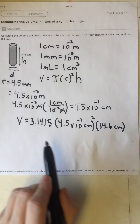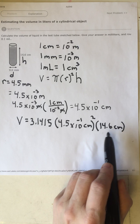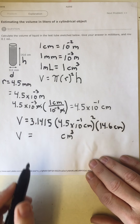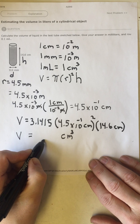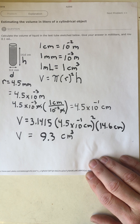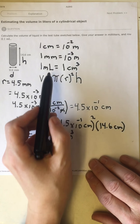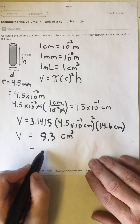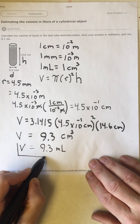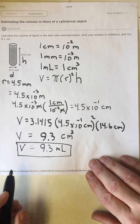Looking at the units: pi is unitless, the radius squared gives centimeters squared, and the height gives centimeters, so the volume units are centimeters cubed. The numerical value, rounded to the nearest 0.1 milliliter, is approximately 9.28, which rounds to 9.3. Since one milliliter equals one centimeter cubed, we can write this as 9.3 milliliters. Note that milliliter, centimeter cubed, and cubic centimeter are all the same quantity with different names.